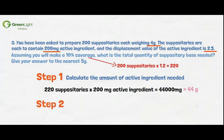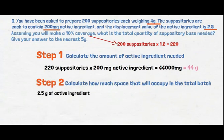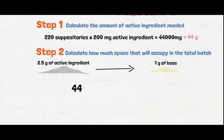Next, calculate how much space that will occupy in the total batch, taking into consideration the displacement value. You know the displacement value is 2.5, meaning 2.5 grams of active ingredient displaces 1 gram of base. Now calculate how much 44 grams of active ingredient will displace by using cross multiplication. This gives you 17.6 grams.